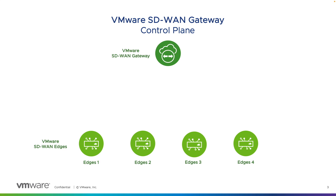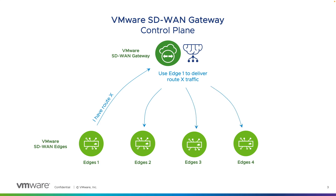One of the main functions of the gateway is that it serves as the control plane for the routing domain — you can think of it as the brains for the overlay fabric. Gateways behave similar to a BGP route reflector. SD-WAN edges send their routes to the gateway, and the gateway in turn shares that information with other edges in the network, informing them of what edges own those destinations for direct peer-to-peer communication.